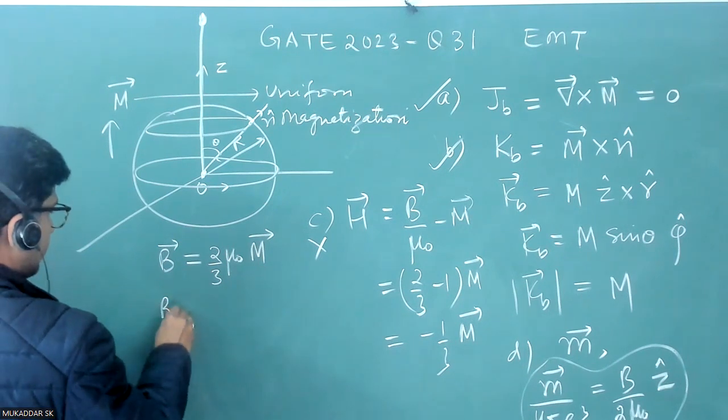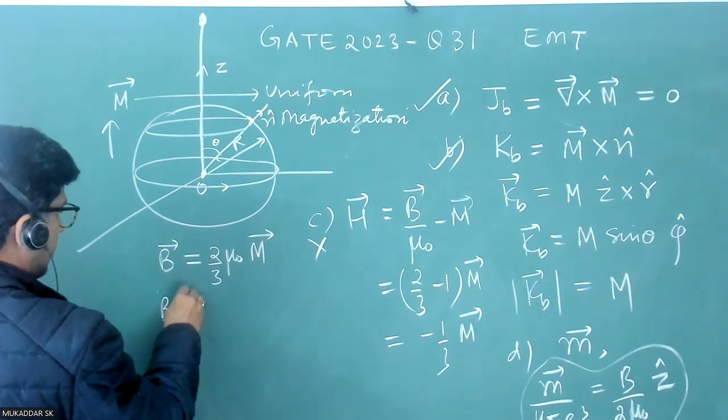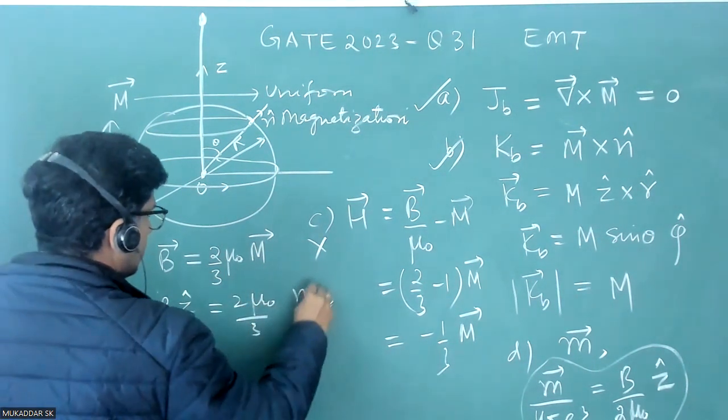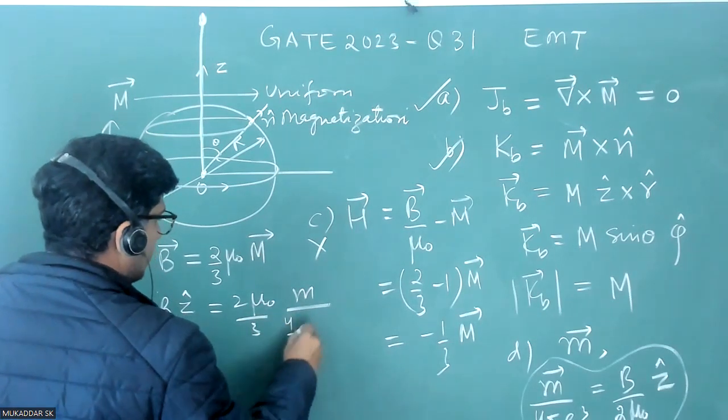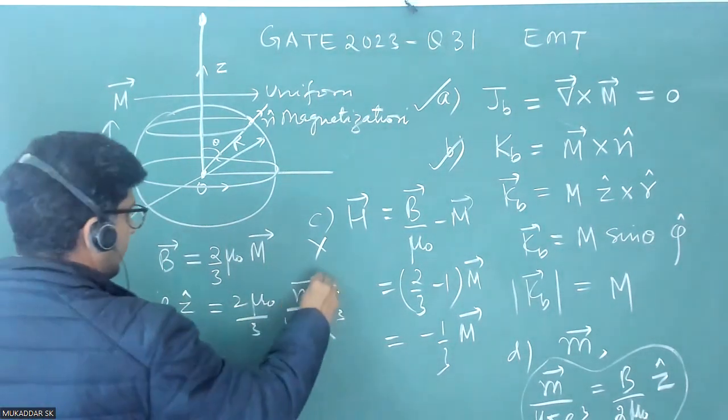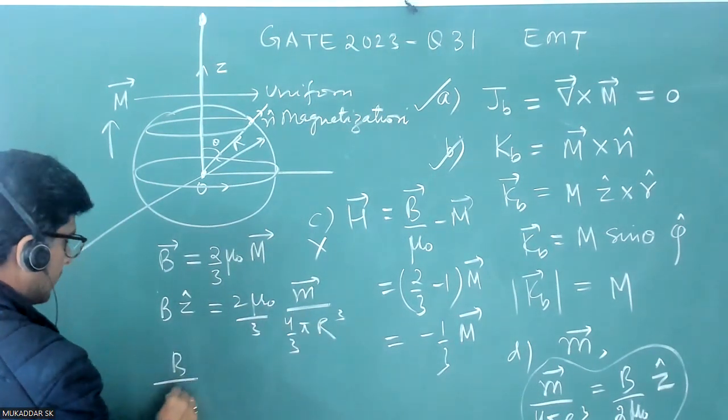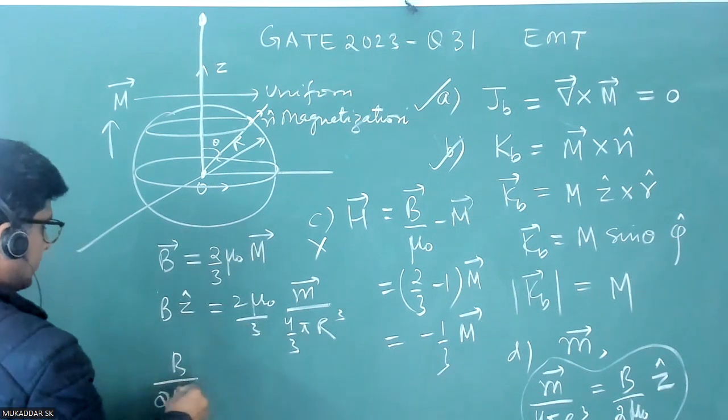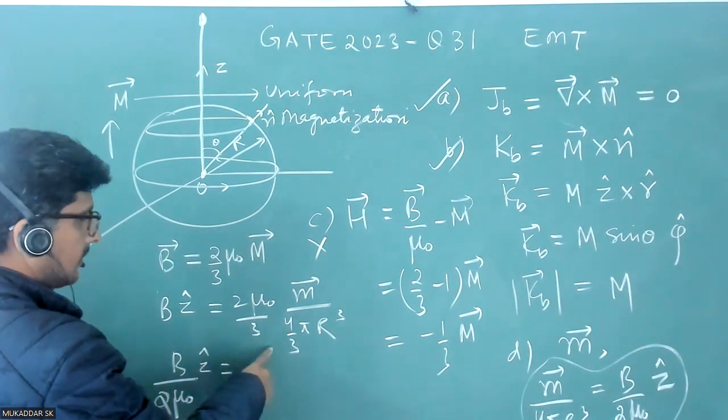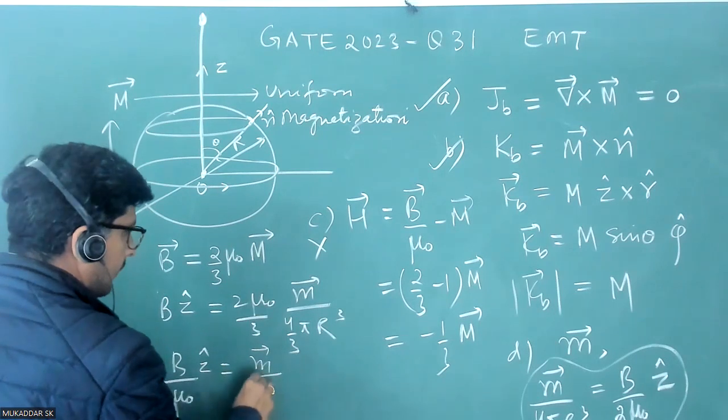This small M can be related to magnetic field by this formula. So you see B is this. B into Z cap is equal to 2 mu naught by 3 into M by 4 by 3 pi R cubed. If I settle it, this is also a vector in the Z cap direction. So M, B by 2 mu naught, if I bring it this side, Z cap is equal to M by 4 pi R cubed.